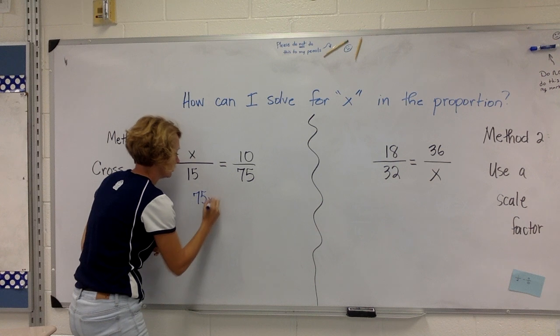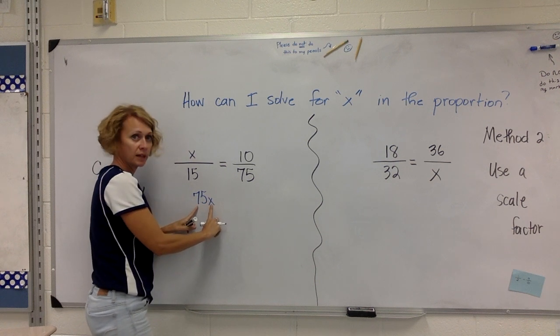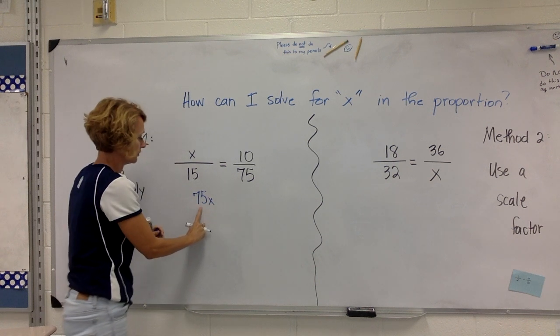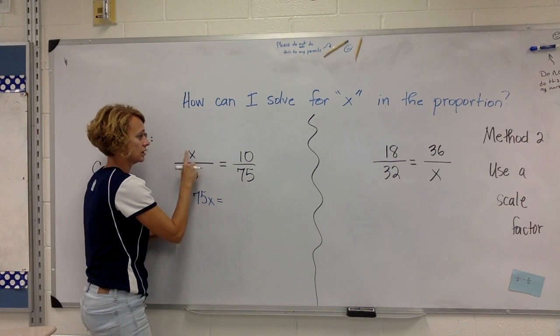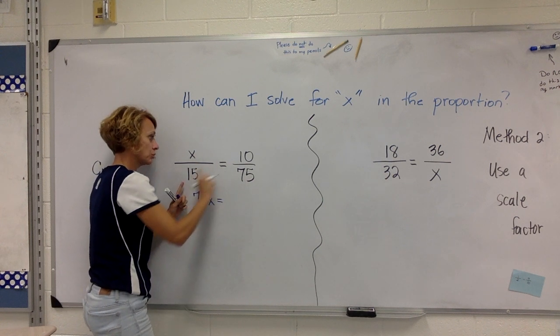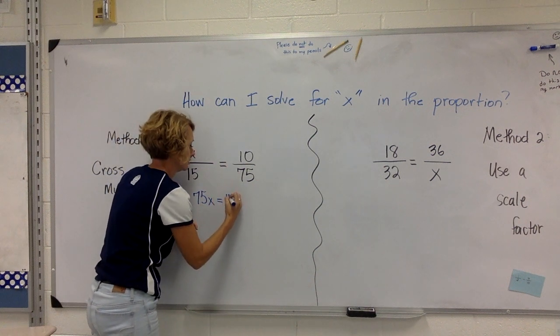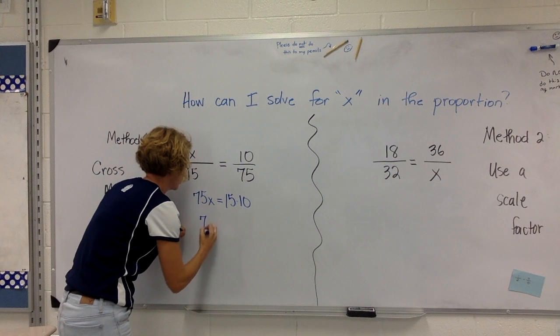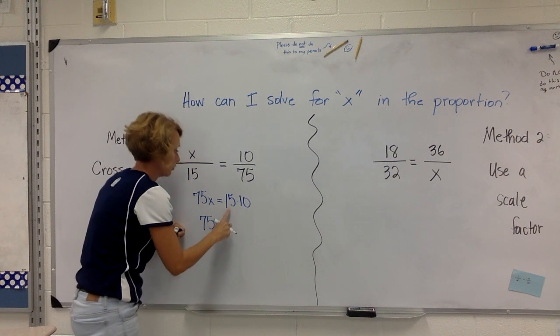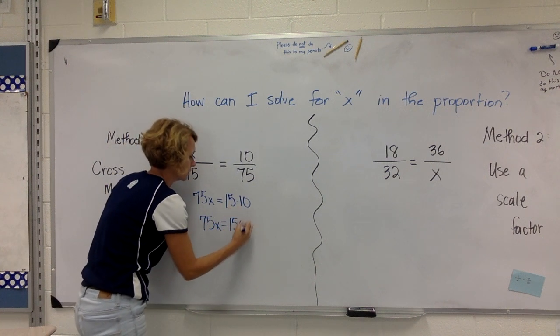Let's take 75 and write that it needs to be multiplied by x. Remember 75 is my coefficient and I write that before my variable. These multiplied together are equal to these multiplied together. Okay, so I'm going to solve this equation. 15 times 10 is 150.